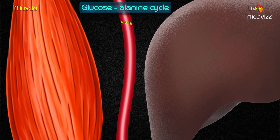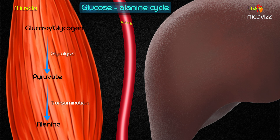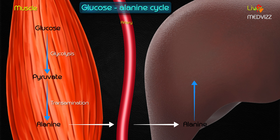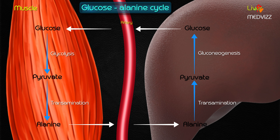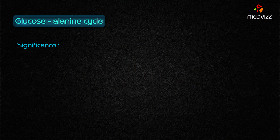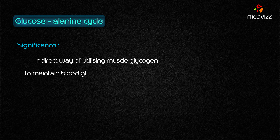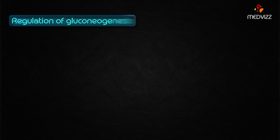Next is the glucose-alanine cycle. In fasting conditions, alanine is produced from pyruvate by transamination in muscles, where pyruvate is produced from glucose or glycogen through glycolysis. The alanine is transported to the liver through the blood, where it is converted back into pyruvate via transamination, and pyruvate is then converted into glucose through gluconeogenesis, which enters the blood and is utilized by muscle. This cycle provides an indirect way of utilizing muscle glycogen to maintain blood glucose levels in fasting conditions.